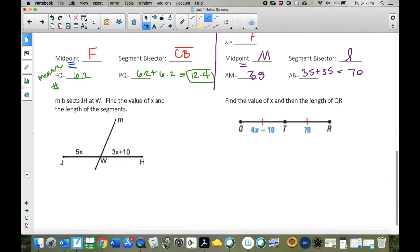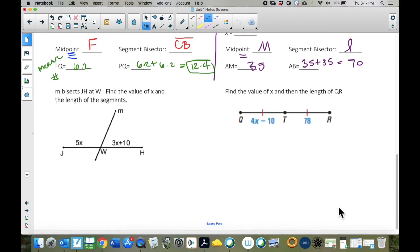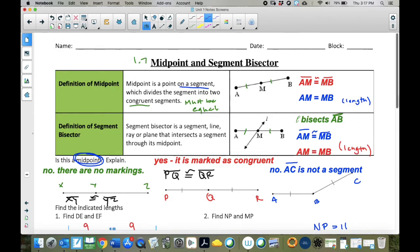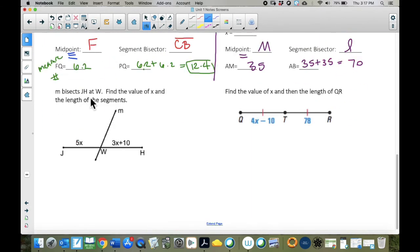Next problem. And these are going to be the last two for this video because the next page will give you a preview. We're skipping the next page. So, M bisects JH at W. Here's line M. It bisects segment JH at W. That means W is our midpoint. Put a little dot there for me.